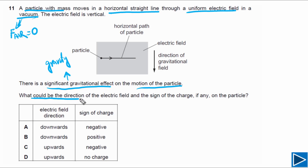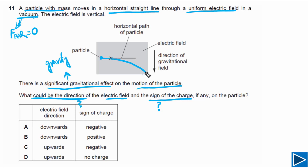The question asks what could be the direction of the electric field and the sign of the charge. First, let's imagine only one force is acting on this particle — gravity, which always acts vertically downwards. If only gravity acted, the particle would follow a parabolic path. But we want the particle to move in a horizontal straight line, so forces acting along the vertical direction must be balanced.